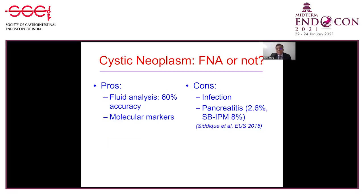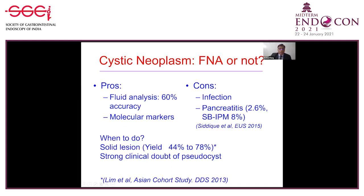One question often asked is: when doing EUS, should you do FNA or not? The pros are that fluid analysis has about 60% accuracy and you can take fluid for molecular markers. The problem is that you can introduce infection and sometimes even pancreatitis. If you have a solid lesion within the cystic tumor, yield increases from 44% to 78%. If there is strong clinical doubt of pseudocyst, FNA should be performed.